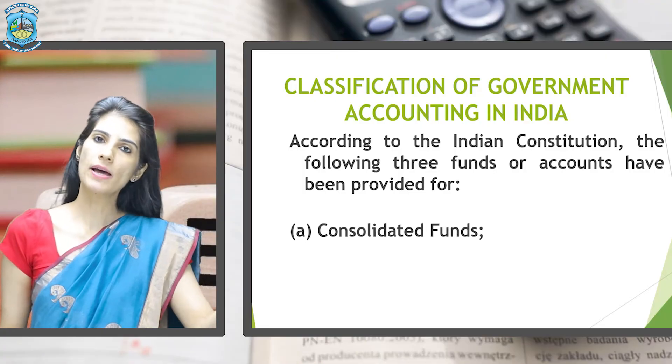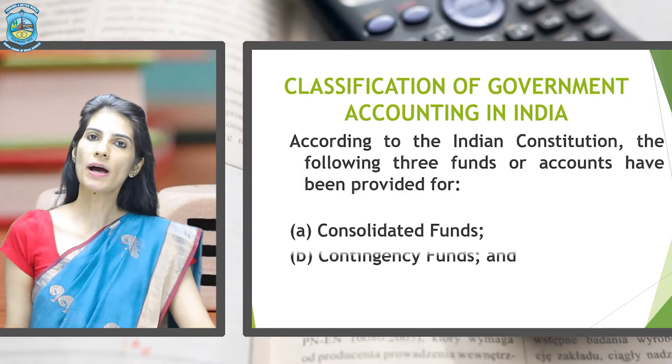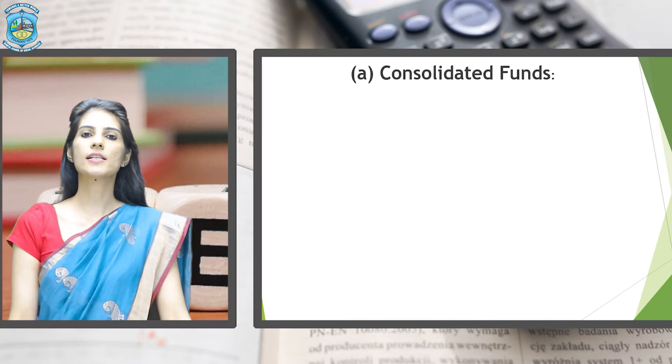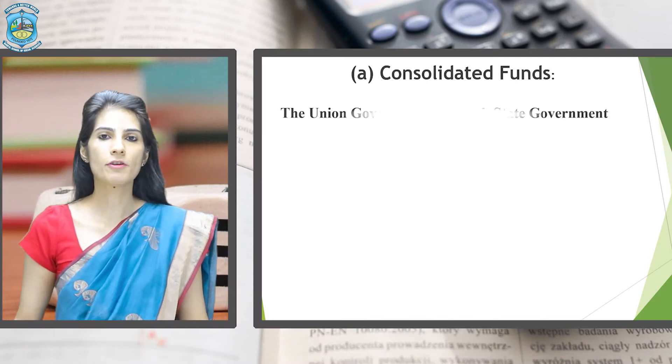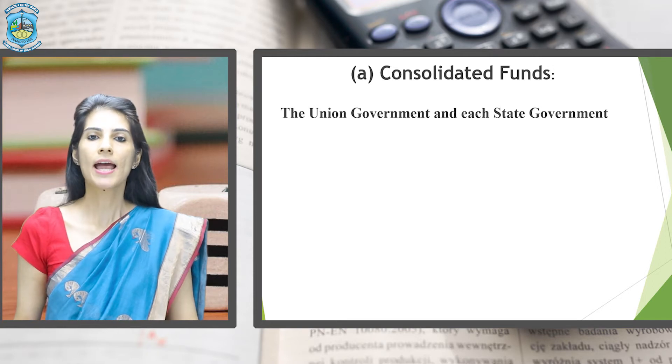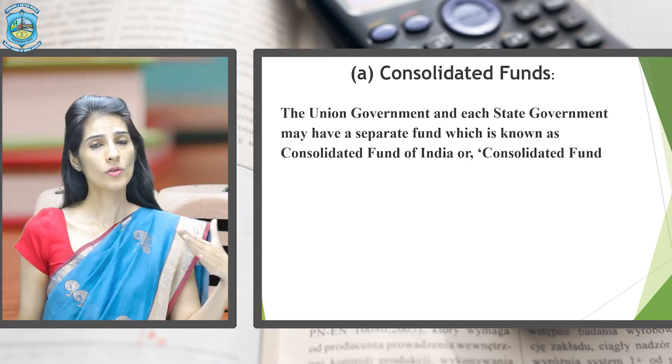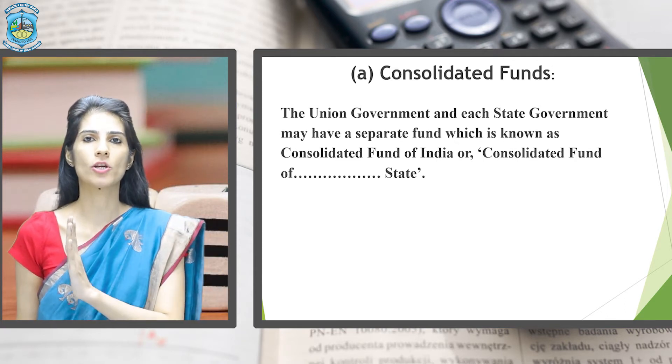Now let's start discussing the three accounts of Government Accounting one after another. According to the Indian Constitution, the following accounts have to be prepared: the first one is the Consolidated Funds of India, the second one is the Contingency Fund of India, and the third one is the Public Accounts. The Union Government and each state government has to prepare a separate fund which is termed as Consolidated Fund of India or Consolidated Fund of that particular state.